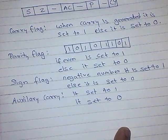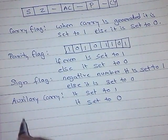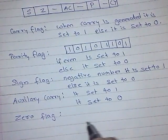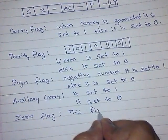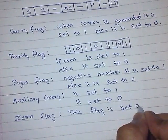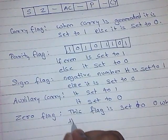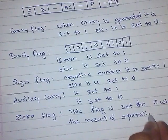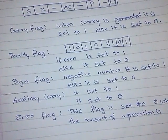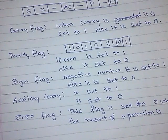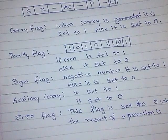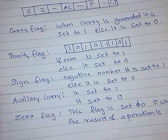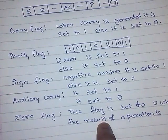Next flag is zero flag. This flag is set to 0 when the result of operation is 0. Suppose we wrote a program for separating 2 numbers. Suppose we do the operation 2 minus 2. When we do this, the result will contain as 0 in accumulator. Hence, the result of the operation is 0.